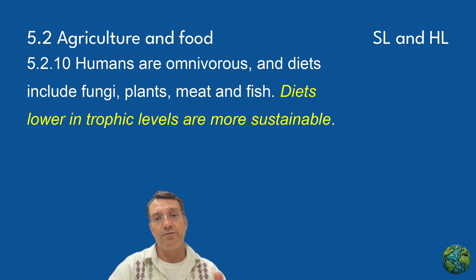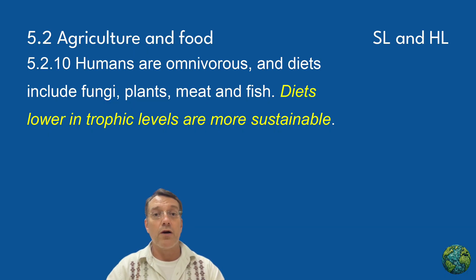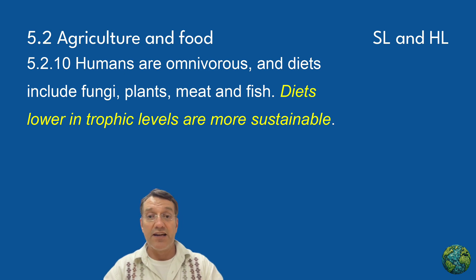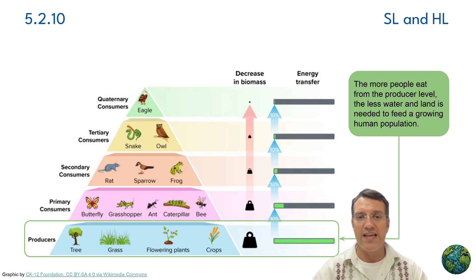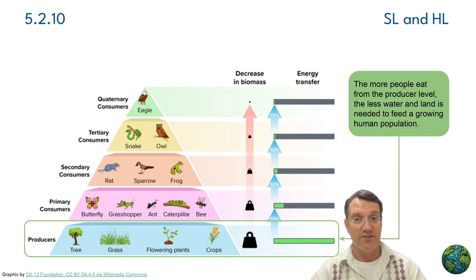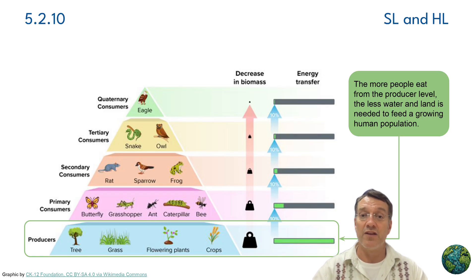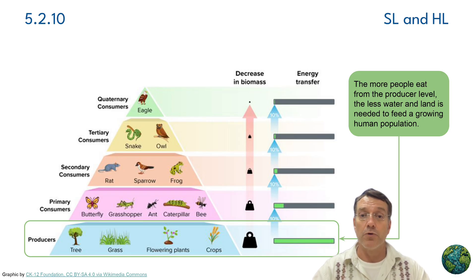Now let's consider how our food choices affect sustainability. Humans are omnivores with diets that include fungi, plants, meat, and fish. However, diets lower in trophic levels are more sustainable because they require less land, less water, and less energy to produce the same amount of nutrition. This ecological pyramid shows why eating lower on the food chain is more efficient. Only about 10% of energy transfers from one trophic level to the next, so producing meat requires much more resources than producing plant foods directly.